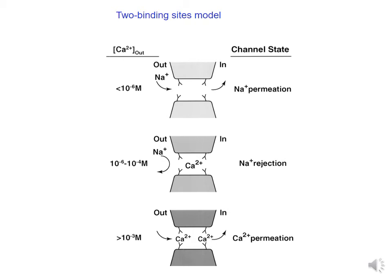At micromolar concentrations, there is a high probability that one of the binding sites will be occupied by calcium, so sodium ions will be rejected at least partially. Then, at millimolar concentrations, both binding sites are occupied by calcium, and electrostatic repulsion drives calcium through the pore.